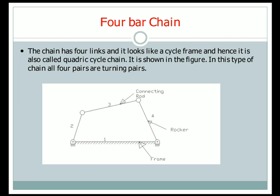The first one is the 4-bar chain. As the name itself says, it has 4 links and it looks like a cycle frame, hence it is also called a quadratic cycle chain. As you can see in the figure, link 1 is fixed and links 2, 3, and 4 are movable. Link 2 is called the crank, link 3 is called the connecting rod, and link 4 is called the rocker. When link 2 rotates, it transfers motion from link 2 to link 4 through link 3, the connecting rod. In this type of 4-bar chain, all 4 pairs are turning pairs.